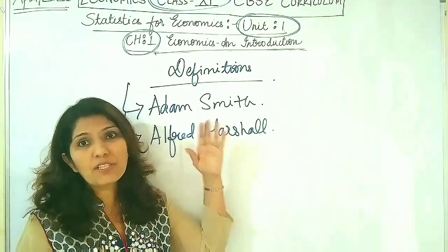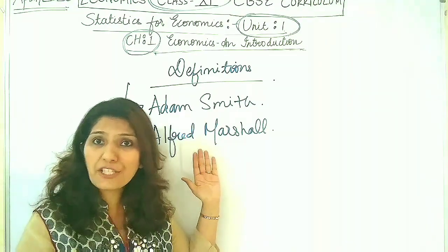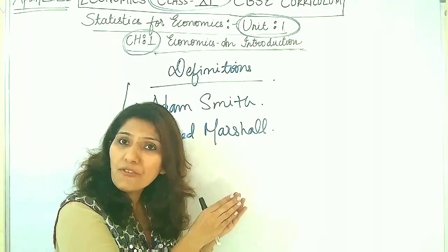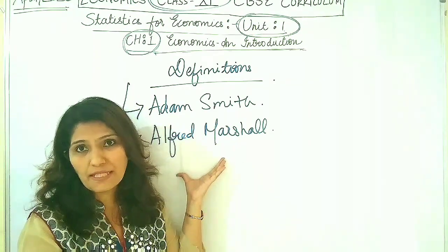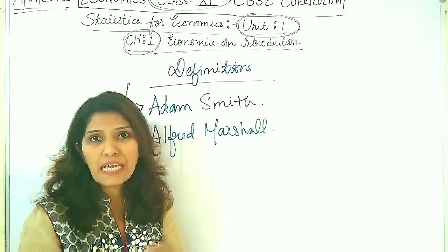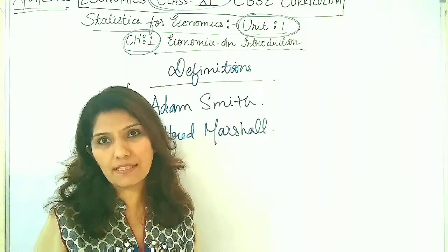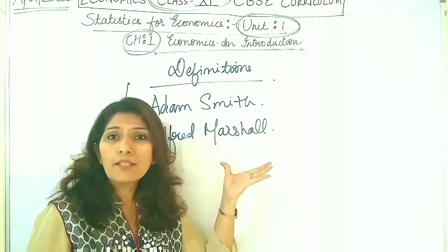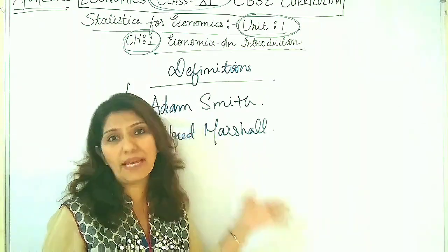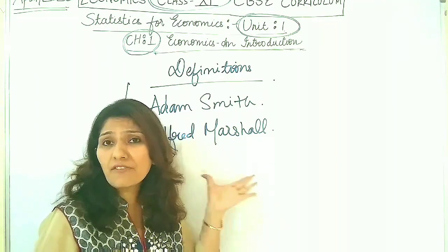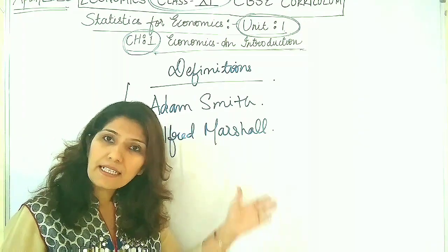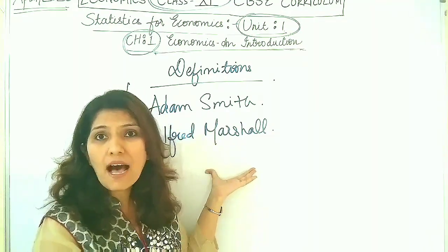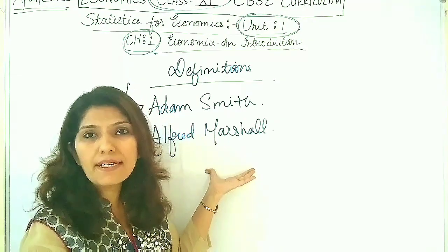The wealth definition was given by Adam Smith, whereas Alfred Marshall gave us the definition in the context of welfare. The definition given by Alfred Marshall is known as the welfare definition of economics. He gave the neoclassical definition of economics. The classical definition basically deals with only production of goods and services, whereas the neoclassical definition relates with the exchange of goods and services. Alfred Marshall is known as the founder of neoclassical economics, and his definition states that economics is a study of man in the ordinary business of life — how a man earns his income and how he spends it to increase material welfare.